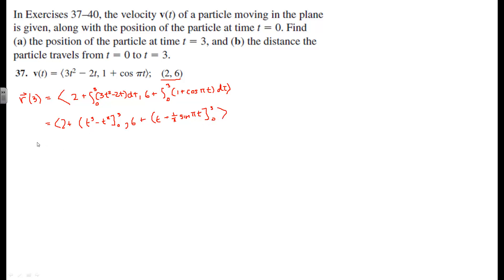Continuing on, 2 plus, and evaluating this at the high end, we're going to get 3 cubed, which is 27, minus t squared, which is 9, minus 0 minus 0 at the low end.